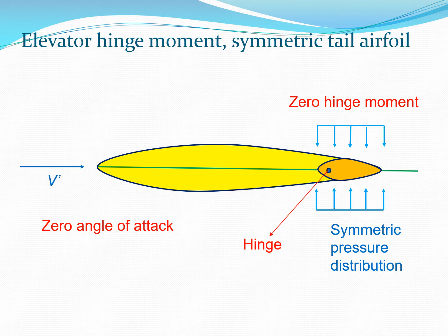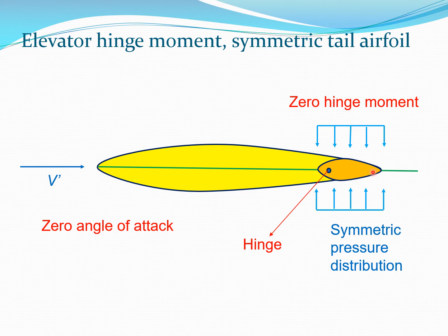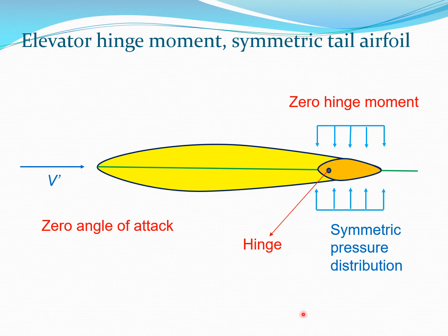Let's start by looking at the horizontal tail. As you remember, the horizontal tail is typically a symmetric airfoil section — shown here in yellow. We are going to consider the elevator, shown in orange, which typically has a hinge. When the entire setup is at zero angle with respect to the airflow, the top and bottom pressure distributions are symmetric and you get zero hinge moment — this is our baseline case.